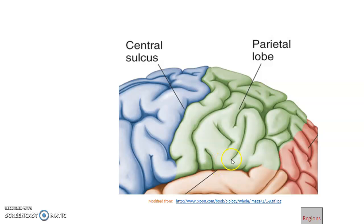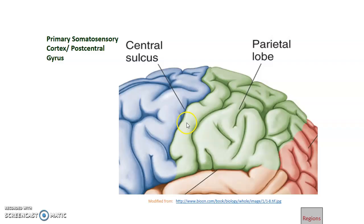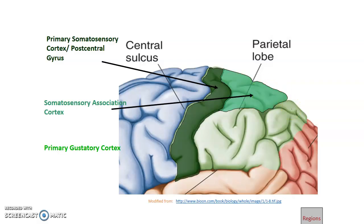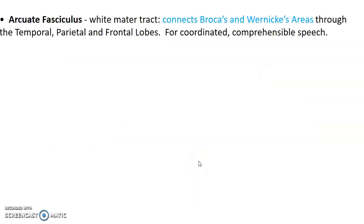Deep within the lateral fissure on the inferior aspect of the parietal lobe is the gustatory area at the parietal insular region, responsible for taste. The main functions of the parietal lobe are the primary sensory area at the postcentral gyrus, sensory association area at the superior parietal lobe, sensory speech at Wernicke's area in the supramarginal gyrus, and gustatory function. We also have the arcuate fasciculus, which connects Broca's area on the frontal lobe with Wernicke's area.